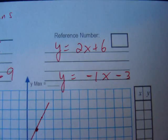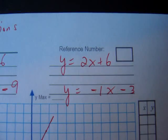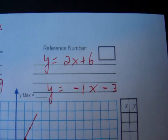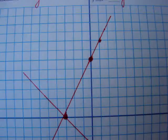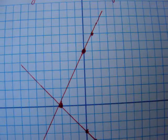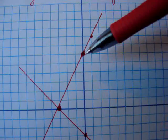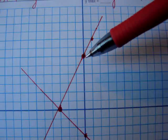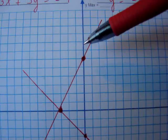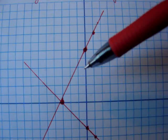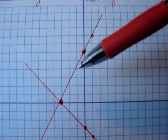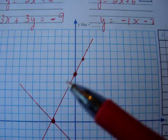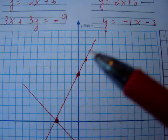First, we'll start by graphing the top equation, y equals 2x plus 6. Remember, 6 is our y-intercept, 2 is our slope. First, we plot the y-intercept. This is 6 right here on the y-axis, and a slope of 2 means rise 2 to the right one. Or you could have gone down 2, left 1. Either way, you can see it's following the same path. This right here is the line y equals 2x plus 6.